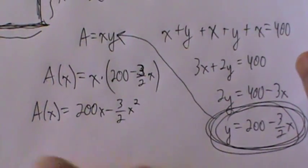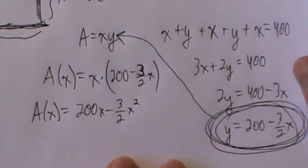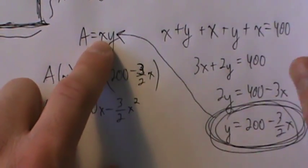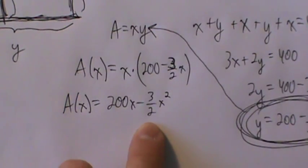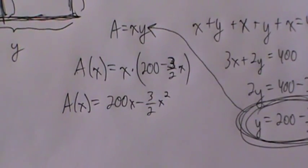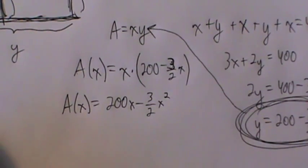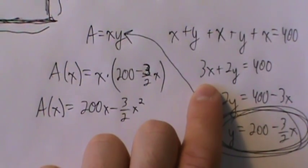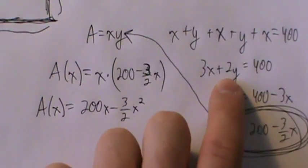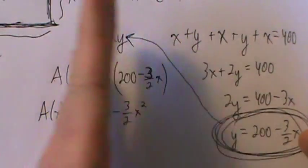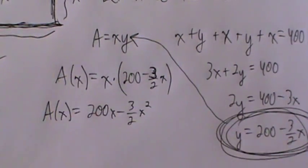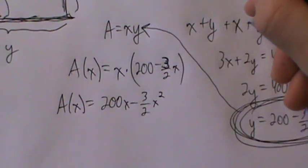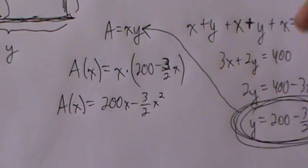Could we have solved for x in terms of y instead? Yes, we could totally do that. We'd get x equals some expression in terms of y, substitute into the area equation so A is just in terms of y. The numbers might be a little more complicated — dividing by 3 gives 400/3 and 2/3 — but it will still work as long as everything is done correctly.